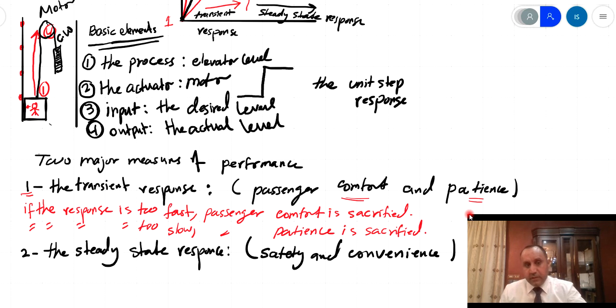This means that in general, I must find a trade-off between the comfort and the patience of the passenger, which is the user. In the end of the day, if I need to produce an elevator, I need to convince the customer to use it.